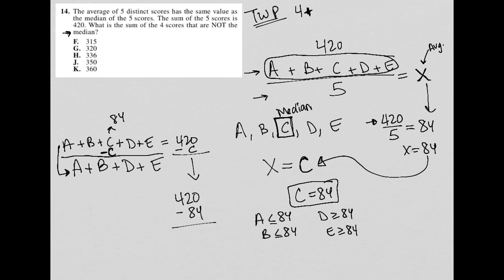So again, I go back to my calculator and find that answer. 420 minus 84 is 336. Therefore, the final answer to this question is choice H.